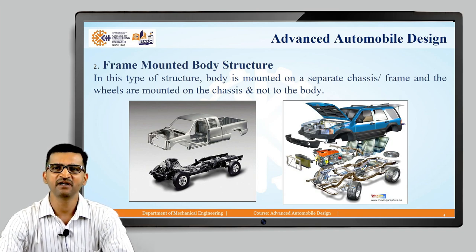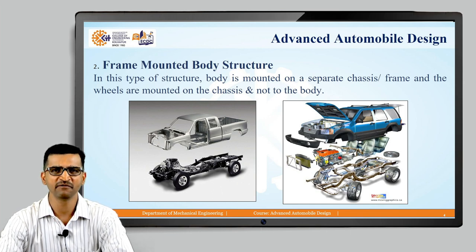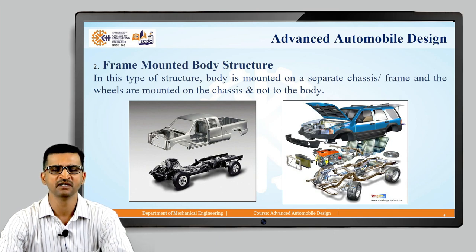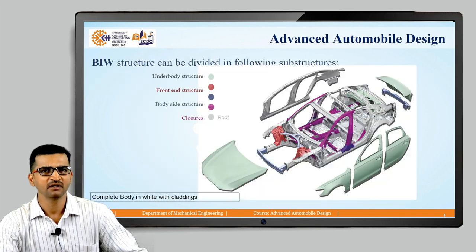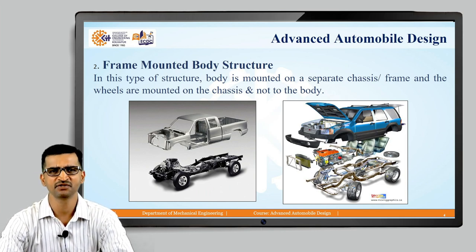Normally, these separate frames are made of standard cross sections like I-section, H-section, or C-section depending on requirements. These are the two main categories of BIW. There is also a third category — a hybrid one — in which some part is made of frame mounted and some part is monocoque, but we are not going to discuss that. Now, before moving on, we will discuss some benefits and limitations.